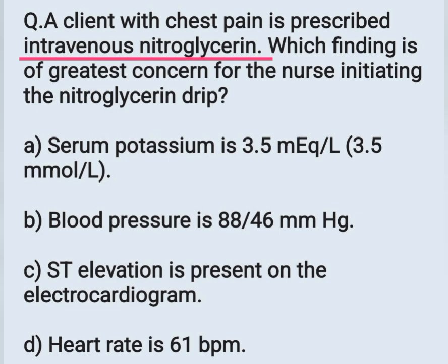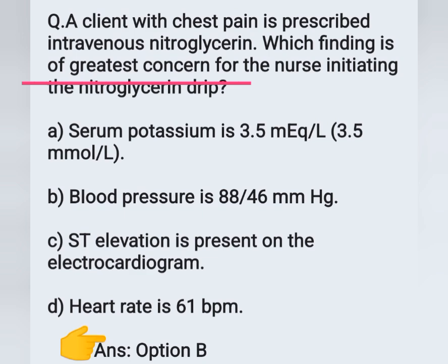Nitroglycerin is a vasodilator that can decrease blood pressure. While administering IV nitroglycerin, we must check the patient's blood pressure. A blood pressure of 88/46 mmHg is critically low, so the nurse would inform the physician. The correct answer is option B, blood pressure 88/46 mmHg.